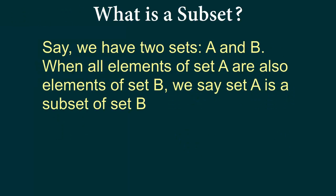So let's say we have two sets, set A and B. When all elements of set A are also elements of set B, we say that set A is a subset of B. So let's think about it this way. Let's say we want to have a set that has all kids in my class. So we will have student 1, student 2, student 3, and so on — a certain number of students who are all in my class.